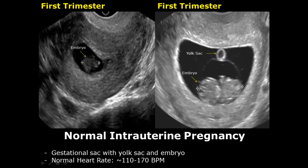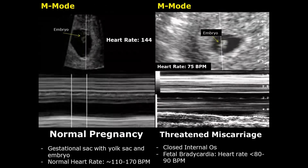The heartbeat usually reaches approximately 170 beats per minute at around 9 to 10 weeks of gestational age. We can use the M-mode to measure the heart rate of the embryo. Here we can see the heart rate is 144 beats per minute, which is within normal range.